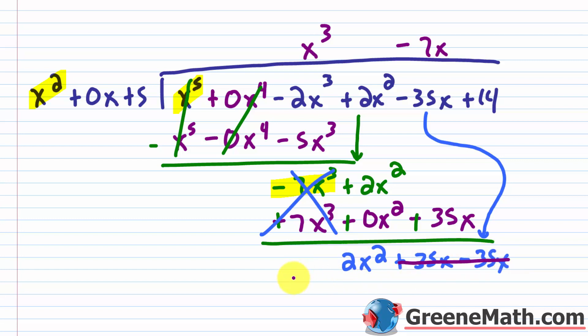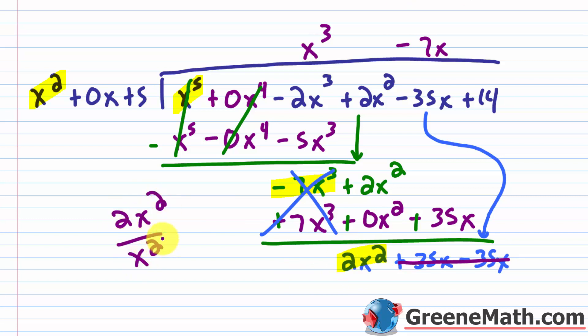Going back to division, leading term into leading term: 2x squared divided by x squared. The x squared terms cancel and I just get 2. So I put plus 2 in the quotient.